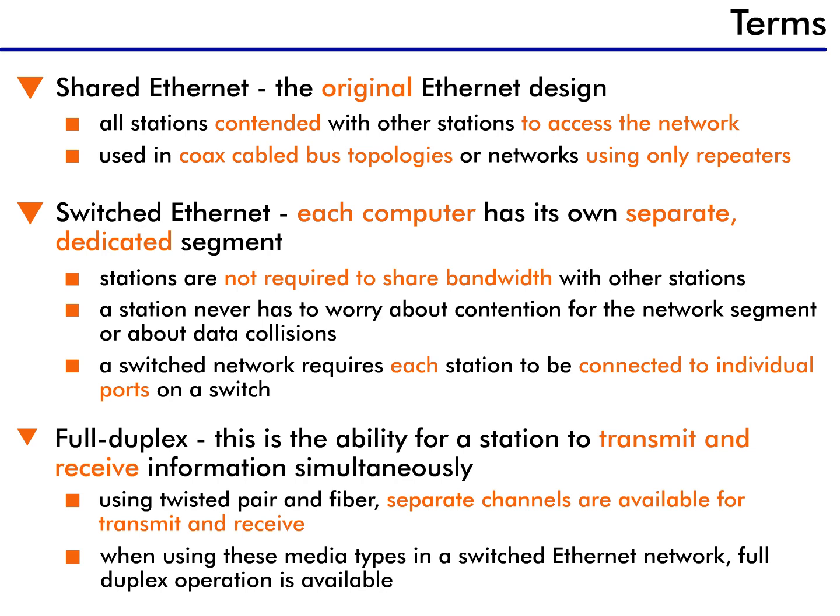Our last term today is full duplex. Full duplex describes the ability for a station to transmit and receive information simultaneously. Initially, Ethernet used coax cables, so communication was half duplex, meaning data can only be transmitted in one direction at a time. With the use of twisted pair and fiber optic cables, separate transmit and receive channels are available, and when using these media types in a switched Ethernet network, full duplex operation is available.